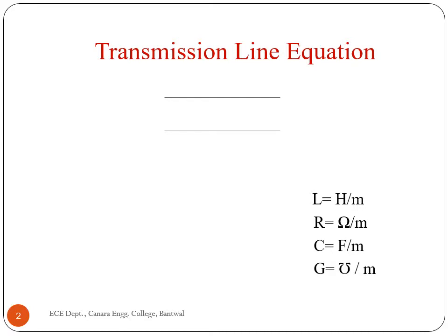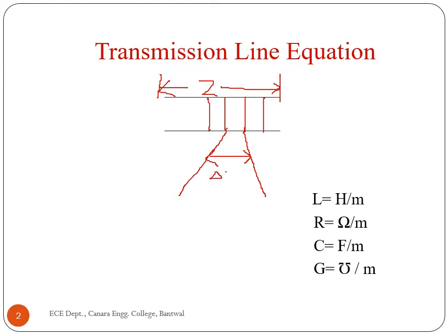In this class, we will try to understand transmission line equations. Consider a parallel wire with length z. The two-wire line is divided into small segments. This small segment length is delta z. This small segment of length looks like the circuit shown below.